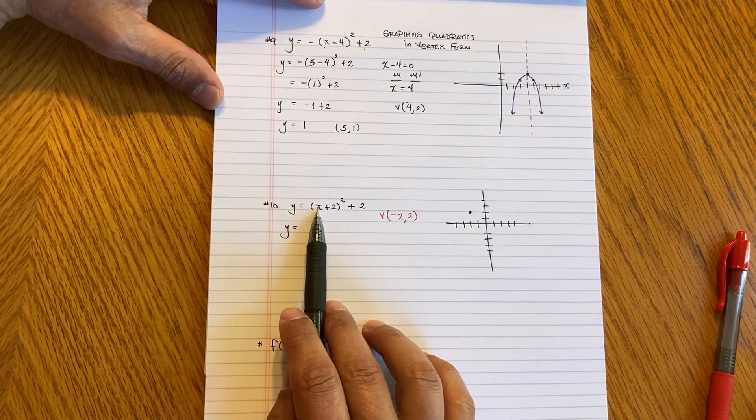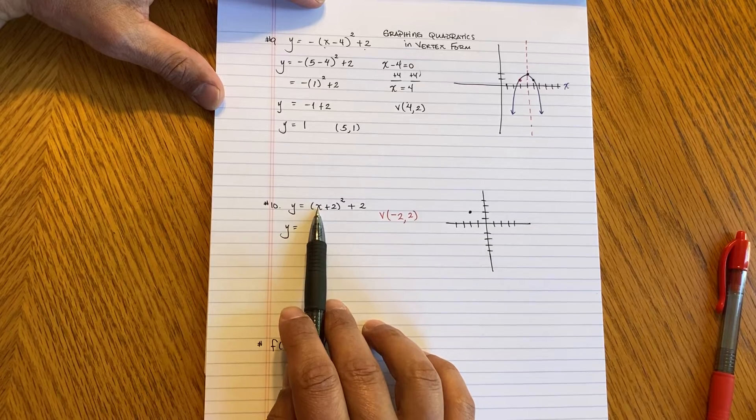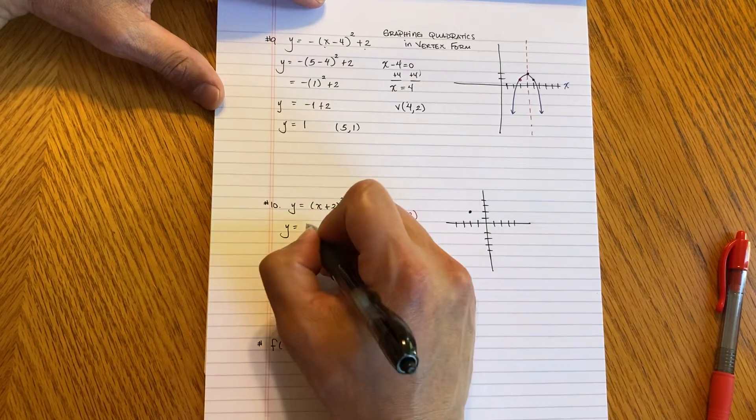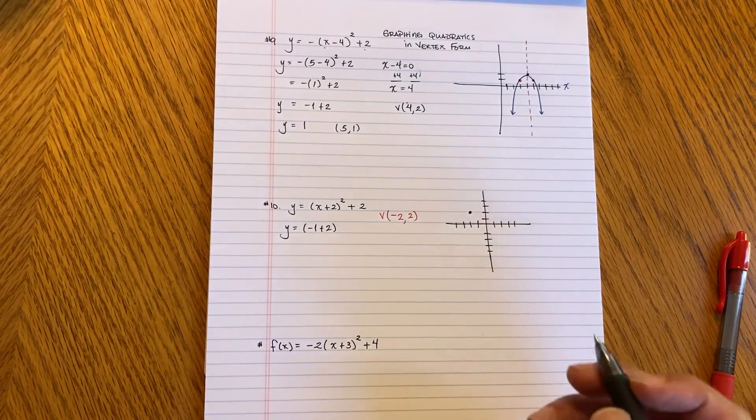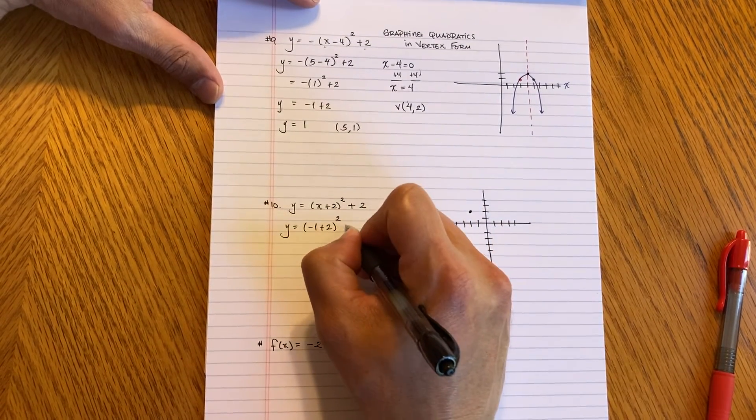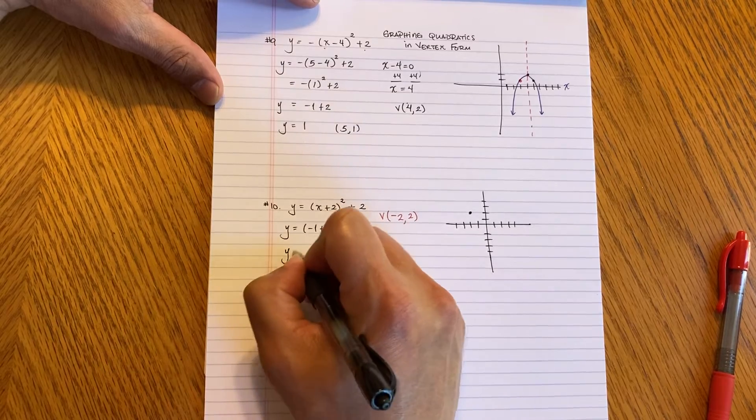So how about I put negative 1. Let's put negative 1. Why negative 1? Because negative 1 plus 2 gives me 1. That's a very easy number to work with. And very simple to graph. Remember, we want to work smarter, not harder.